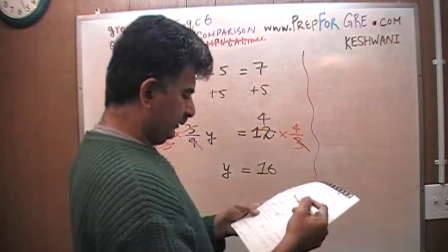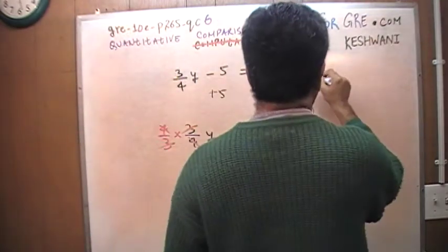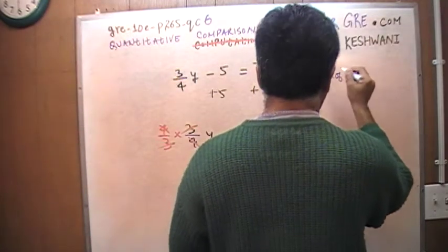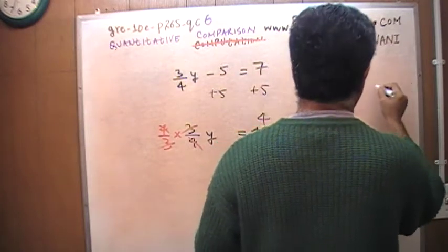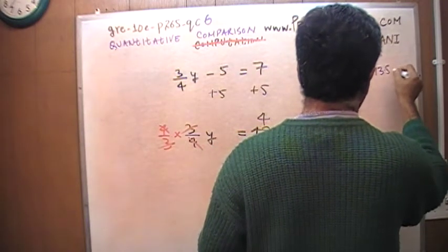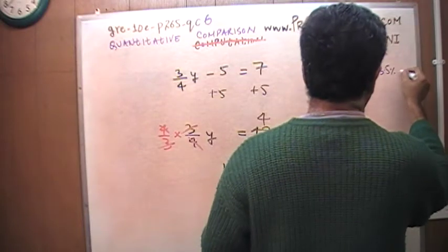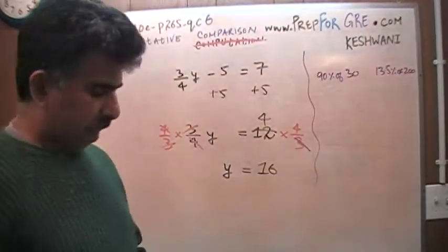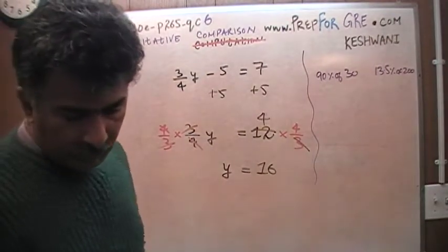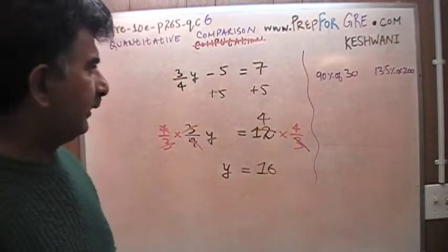And number 6, they want you to compare 90% of 30 versus 13.5% of 200. Well, 90% of 30. How do I figure that out? 90% of 30.